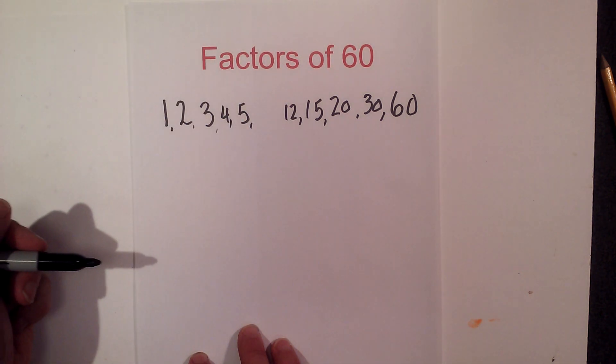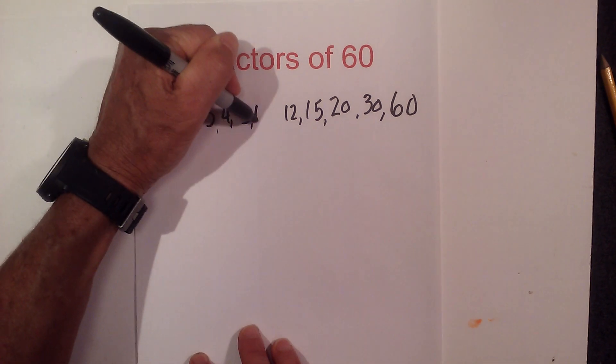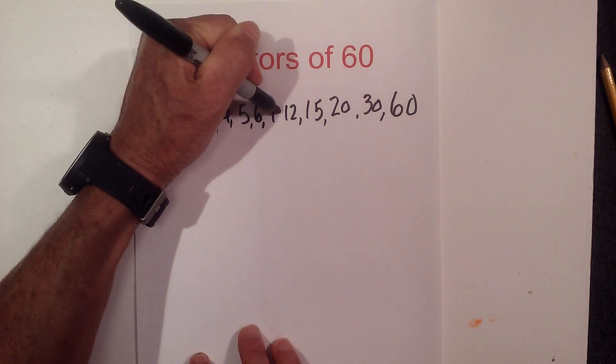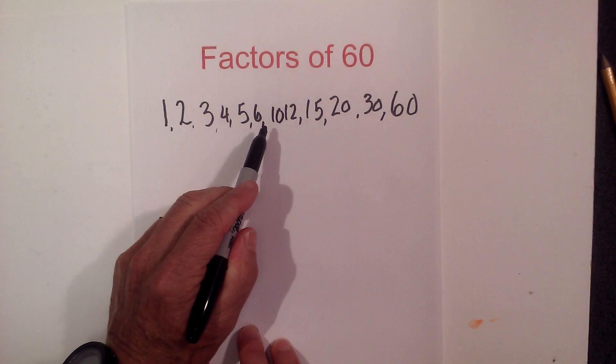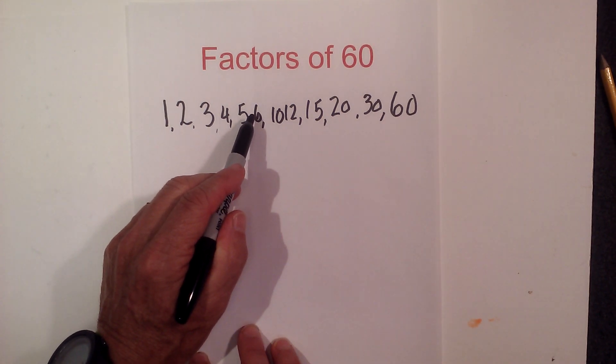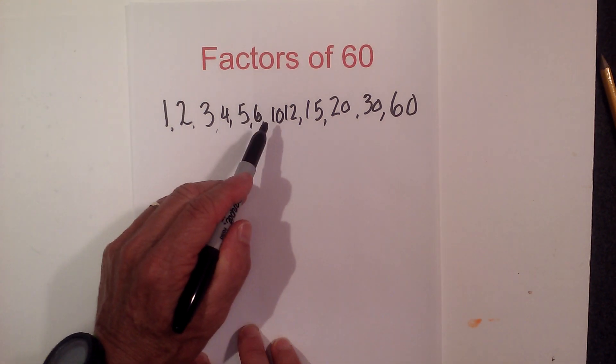Let's go 6 goes into 60 10 times, and then 7 does not go into 60, 8 does not go into 60, nor does 9.